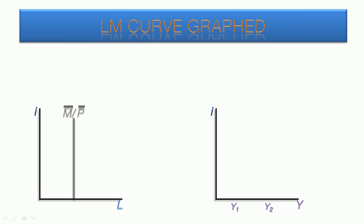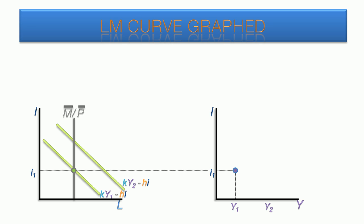We're ready for the LM curve. On the left, we have the money demand and money supply graph. The LM curve will be graphed in the interest-income space on the right. The vertical money supply line is already showing. Here is the demand for money curve for Y1. The point at which it crosses the money supply line produces the first equilibrium rate of interest, I1. As this line is extended to the LM space, it creates our first point as it intersects with Y1. This is repeated for a higher level of national income, Y2, which produces the second equilibrium rate of interest, I2. We extend the line across the LM space and it intersects with Y2.